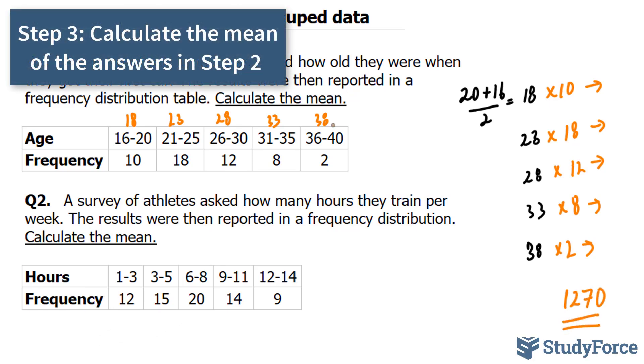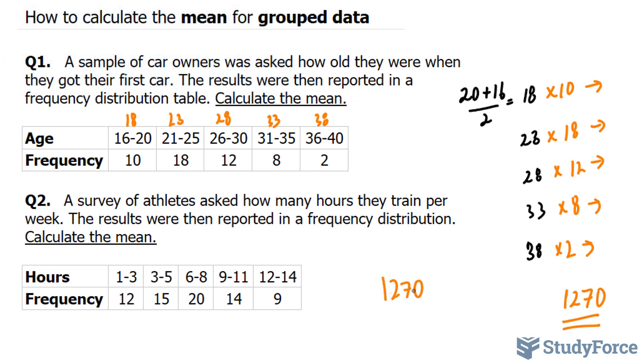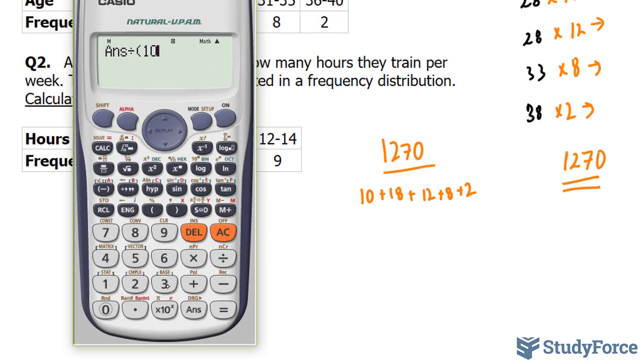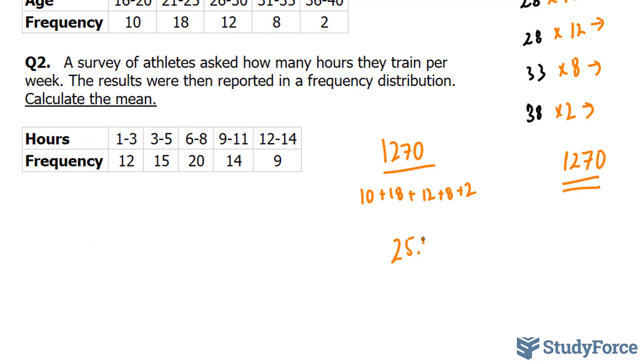The last step is to take this number and divide it by the sum of the frequency. So we'll take 1,270 divided by 10 plus 18 plus 12 plus 8 plus 2. We take this number and we divide it by the sum of these where we end up with 25.4 years. Therefore, the average age that one acquires their first car for the people that were sampled is 25.4 years old.